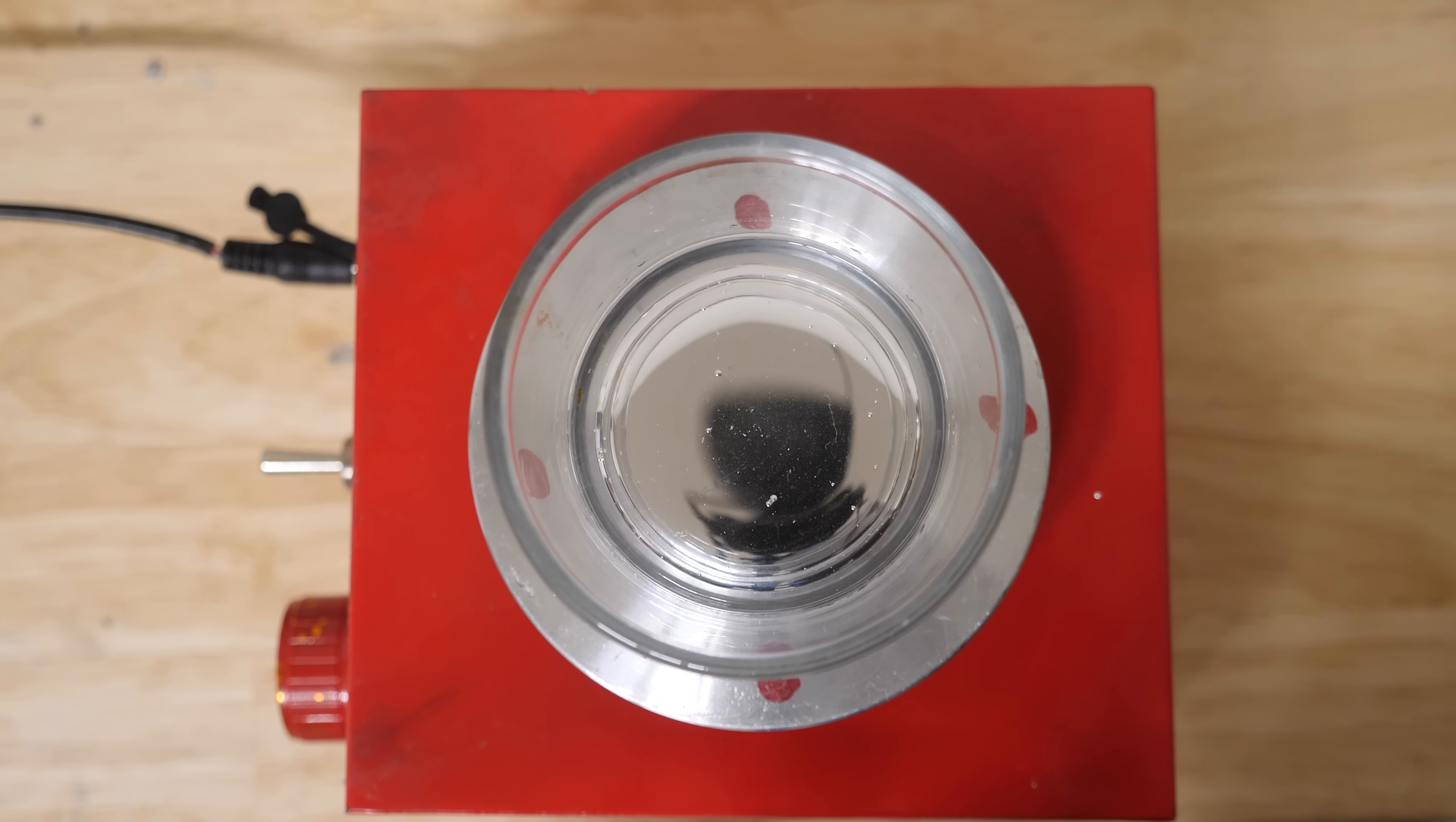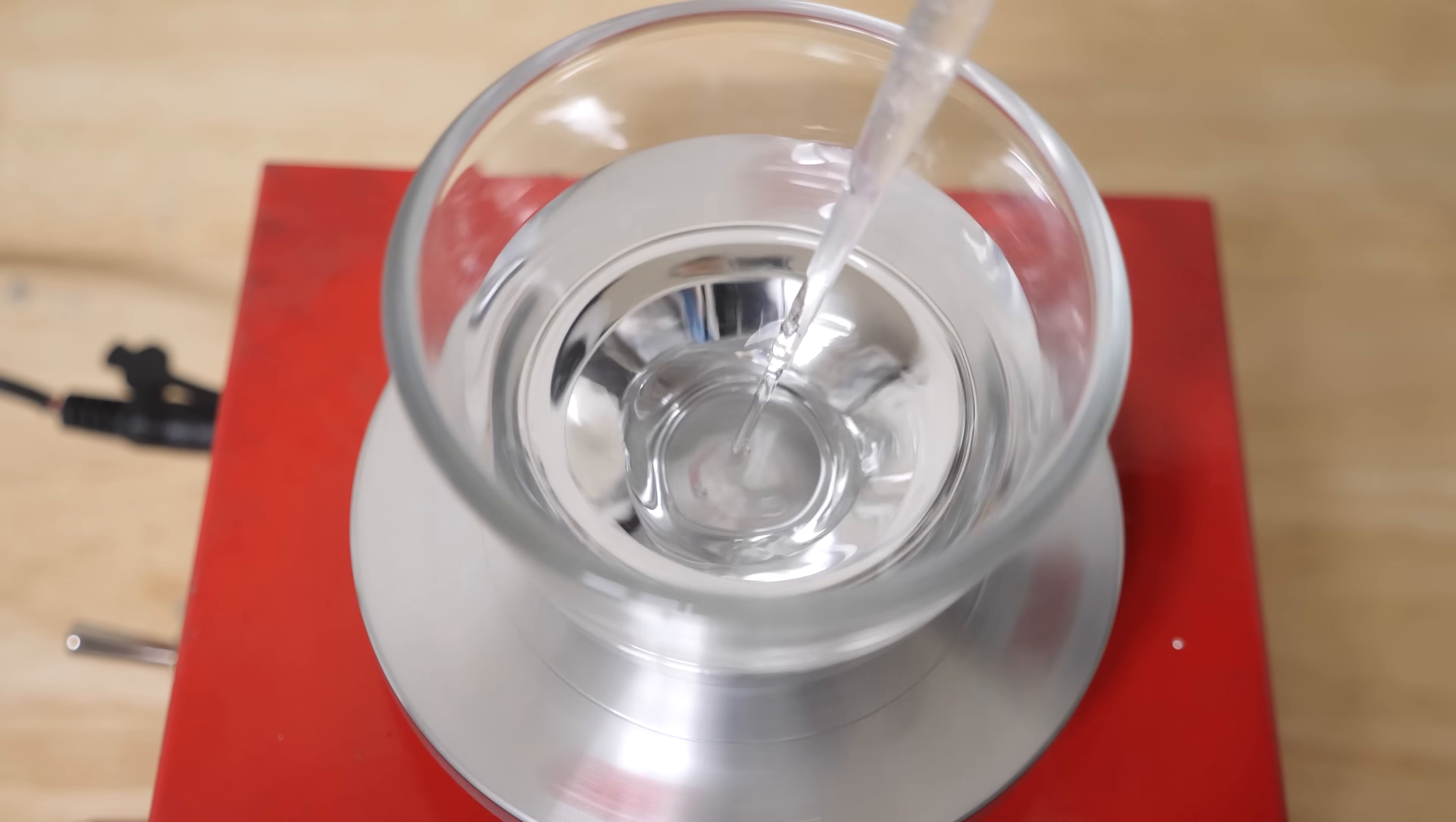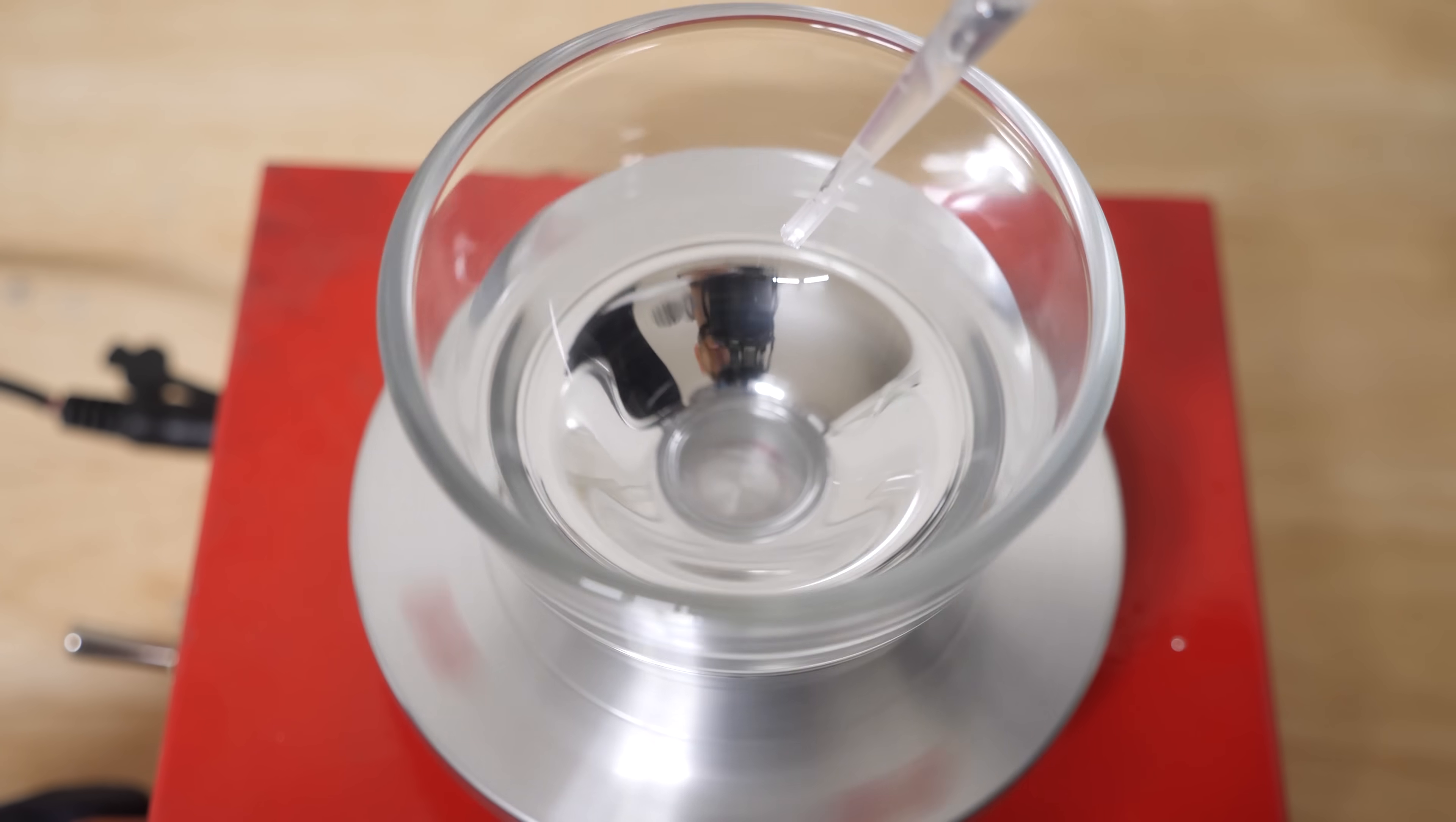Gallium is a shiny metal that can melt in your hand. I have some gallium here and I've also put it in some dilute hydrochloric acid that helps it not oxidize on the surface so it stays shiny. So let's see if we can get it to form a perfect parabolic mirror here.